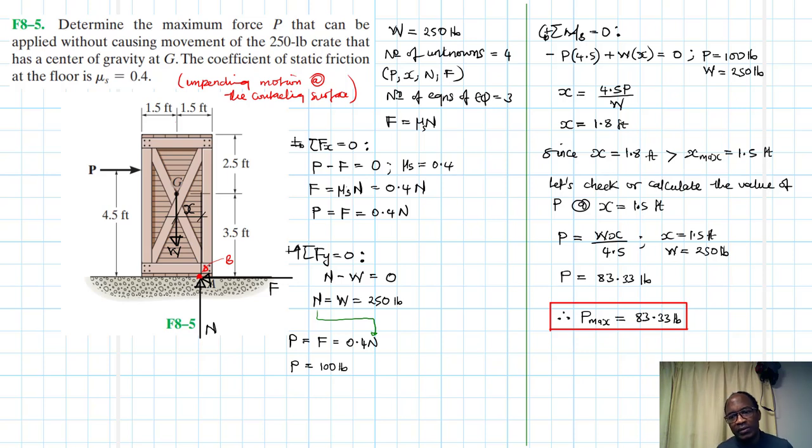This is the value of P that won't cause the crate to overturn. The 100 pounds will cause the crate to overturn. All right, I think this is about it. Bye bye and see you in my next screencast.